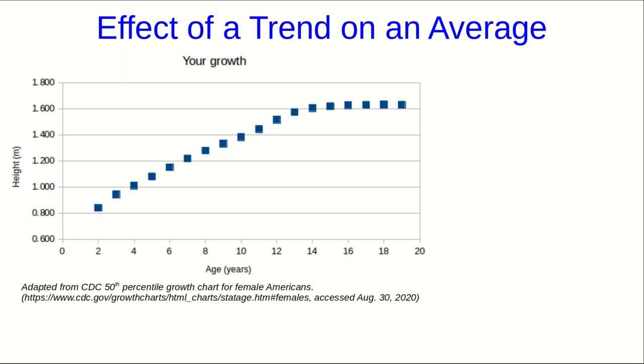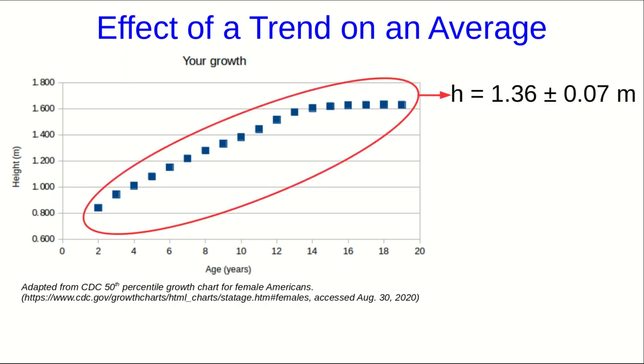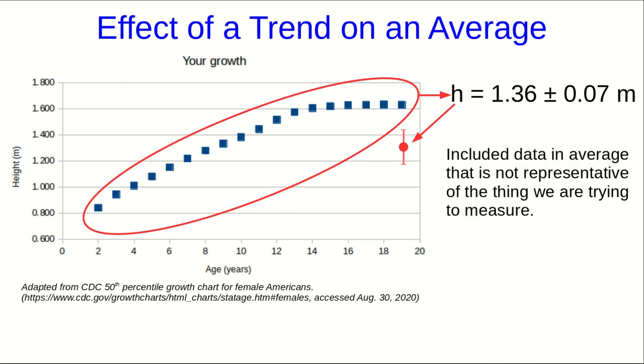But if it's not obvious, here's a simpler example which might make it clearer. So imagine we want to know your height. And here's some data we have on your height from the time you were 2 until the time you were 19. And we want to know your height now. Well, you know, we could just take this data, average over all of it, get a best estimate and an uncertainty, and off we go. And if you put that point and its error bars onto the chart, there it is. Does this seem reasonable as a way of getting your current height? I hope you can see that this is ridiculous. We've included data in the average that isn't representative of the thing that we're trying to measure.